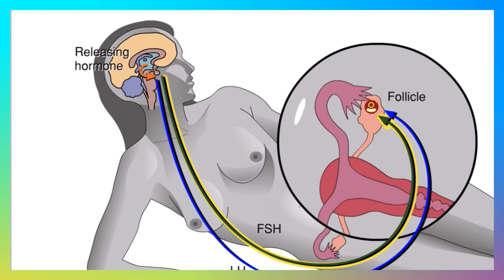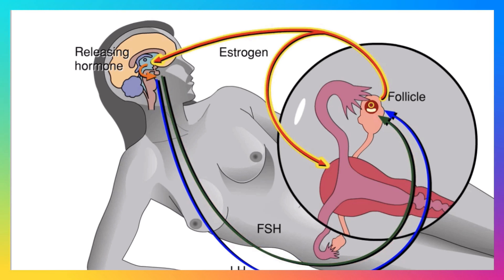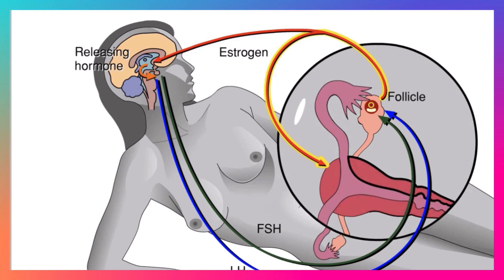The follicle consists of a developing egg cell surrounded by cells that nourish and protect it. The developing follicle begins secreting estrogen, a female sex hormone. Estrogen shapes development of the female reproductive system and female secondary sex characteristics such as broad hips and development of the breasts. Its immediate role is to stimulate regrowth of the lining of the uterus in preparation for possible pregnancy.